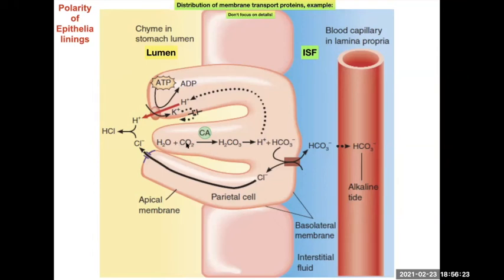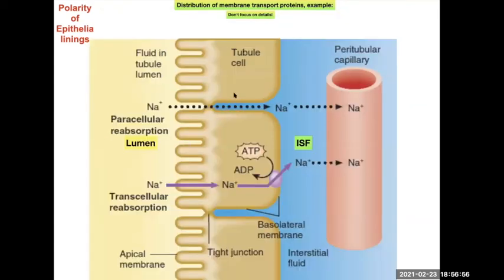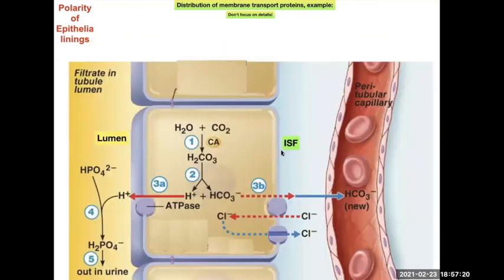In the stomach, chloride channels are present on the luminal side. Inside the cell, carbon dioxide is converted to carbonic acid, which dissociates into bicarbonate and hydrogen ions. The hydrogen ions are pumped out into the lumen, while the bicarbonate ions are moved to the basal surface into the interstitial fluid — this is determined by the distribution of specific channels. In the kidney tubules, sodium moves down its concentration gradient and is then pumped out into the higher concentration region and diffuses into blood vessels.